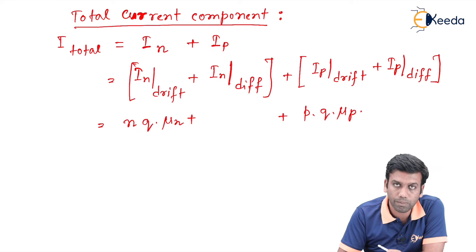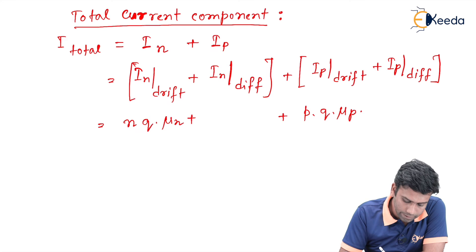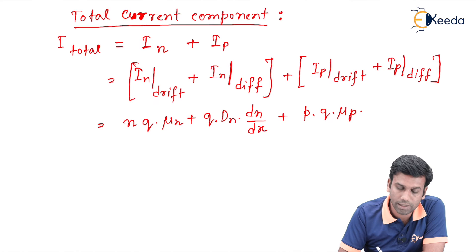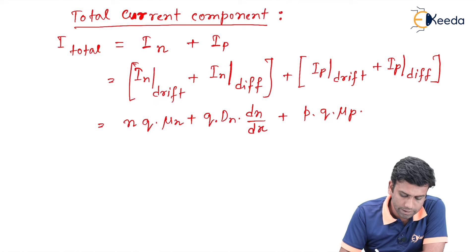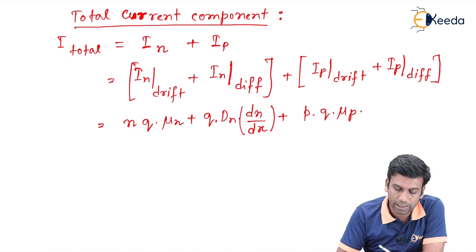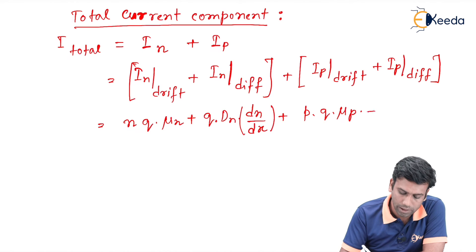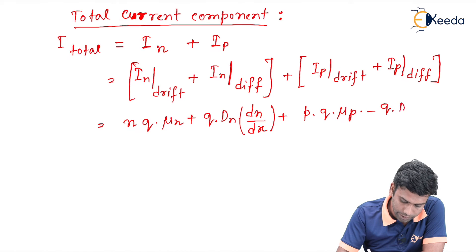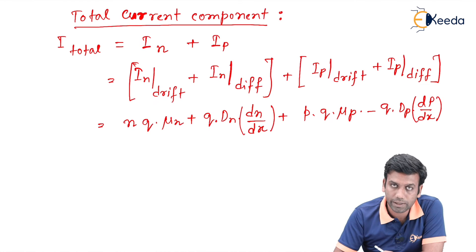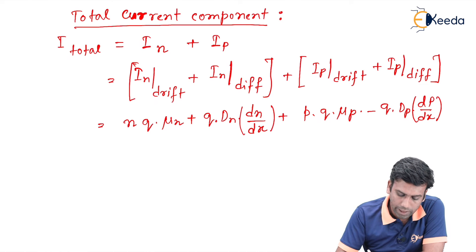The diffusion component of the electron will have a positive sign: q·D_n·(dn/dx), where D_n is the diffusion coefficient for the electron and dn/dx is the concentration gradient for the electron. But for the holes, the diffusion component of the current will have a negative sign: q·D_p·(dp/dx), where dp/dx is the concentration gradient for the holes and D_p is the diffusion coefficient for the holes.